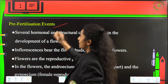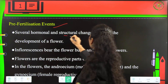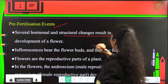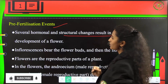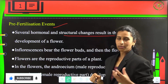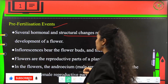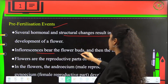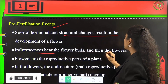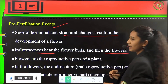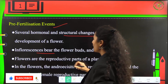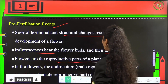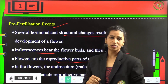Pre-fertilization events. Several hormones and structural changes will result in the development of a flower. Inflorescences will bear the flower buds and then ultimately bear the flowers. Flowers are the reproductive parts of a plant.